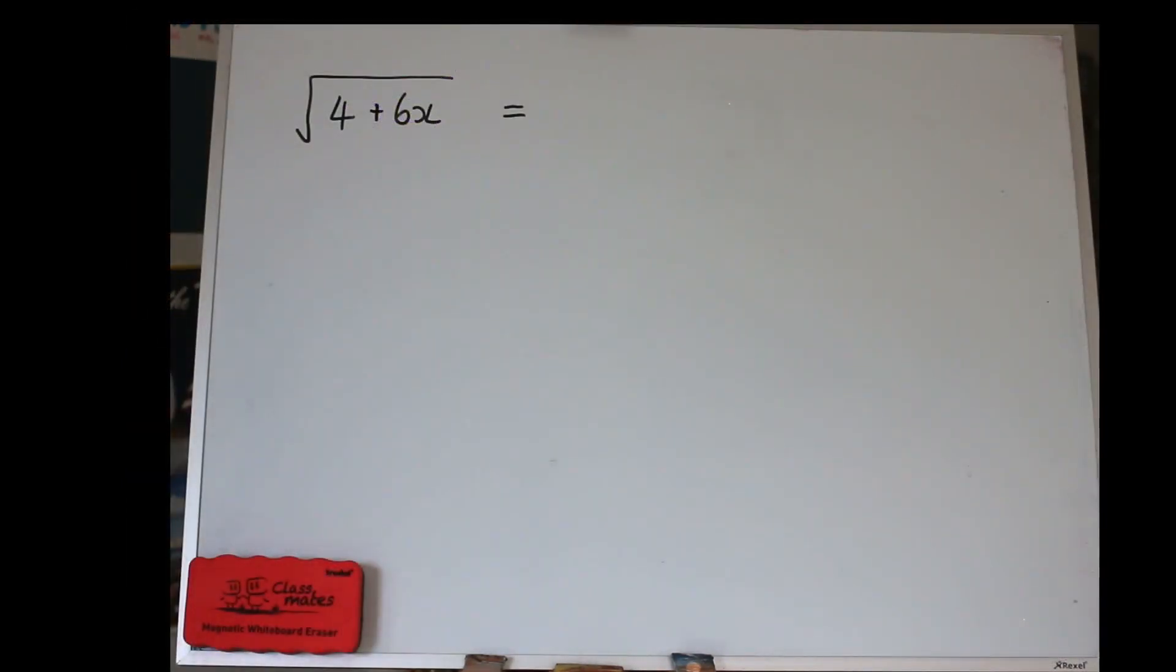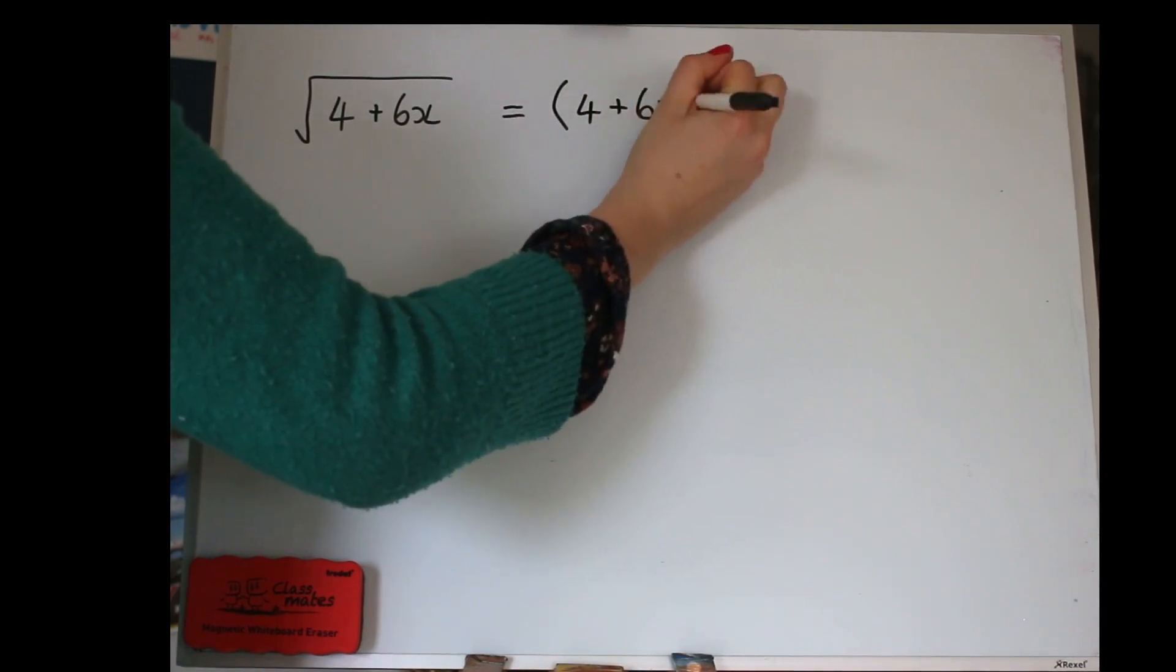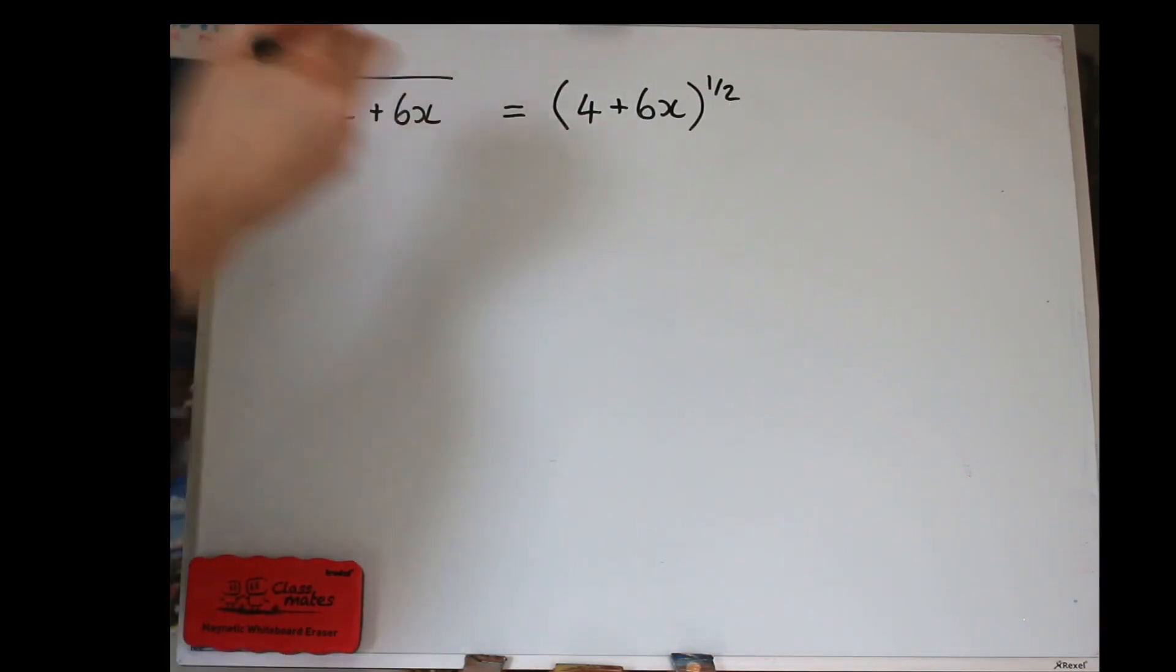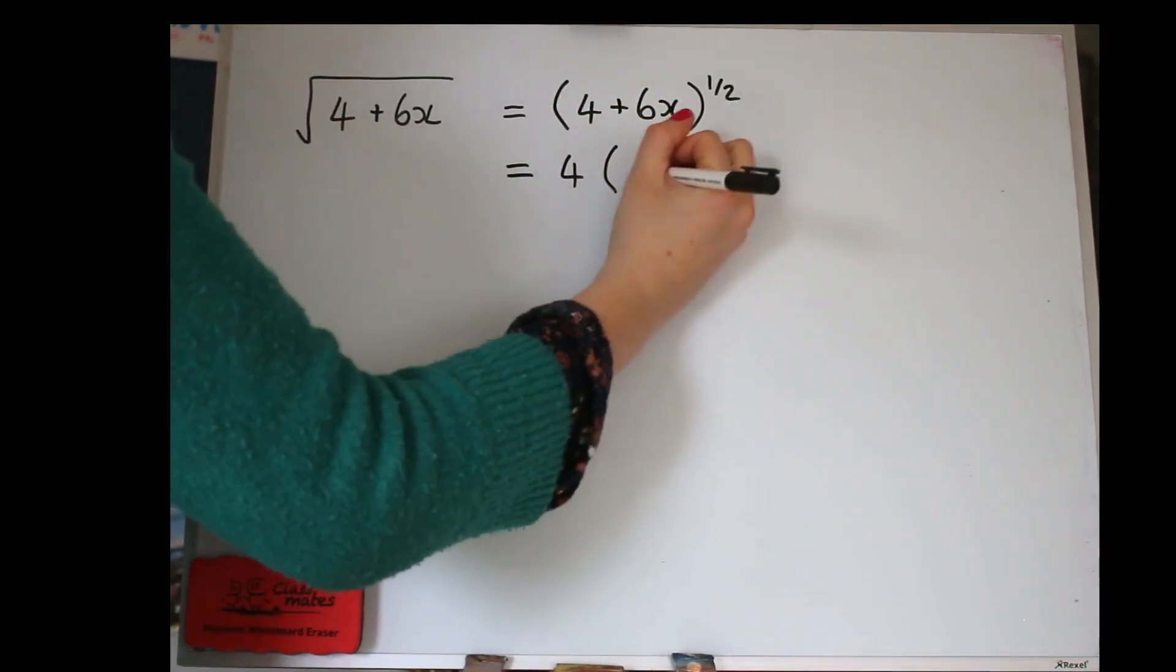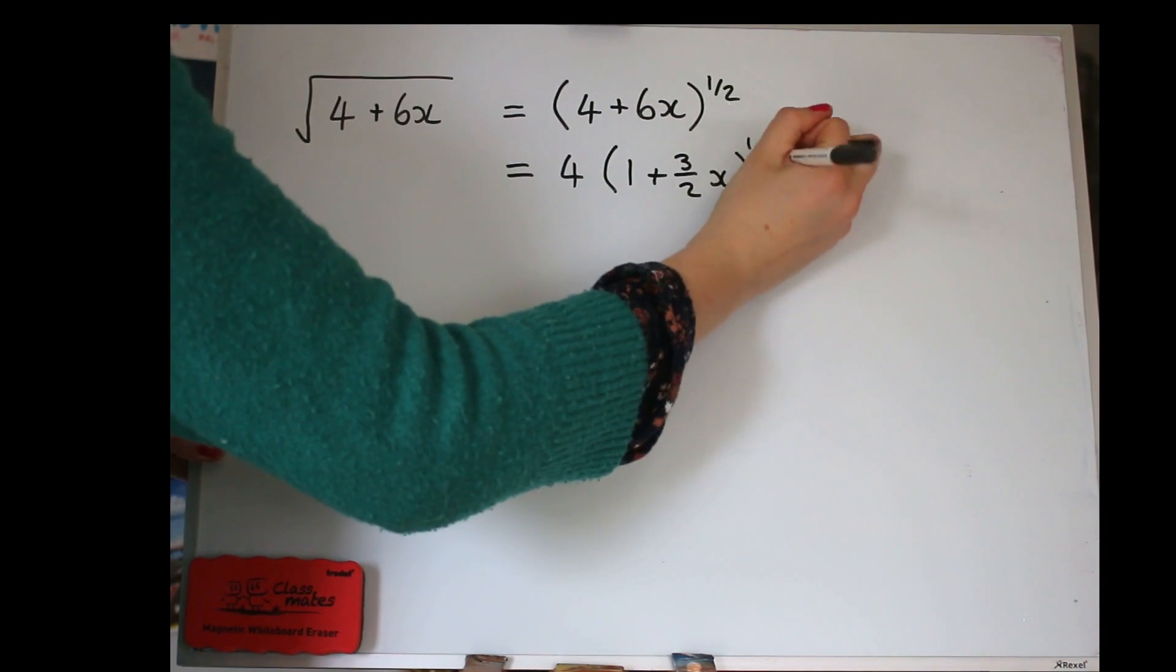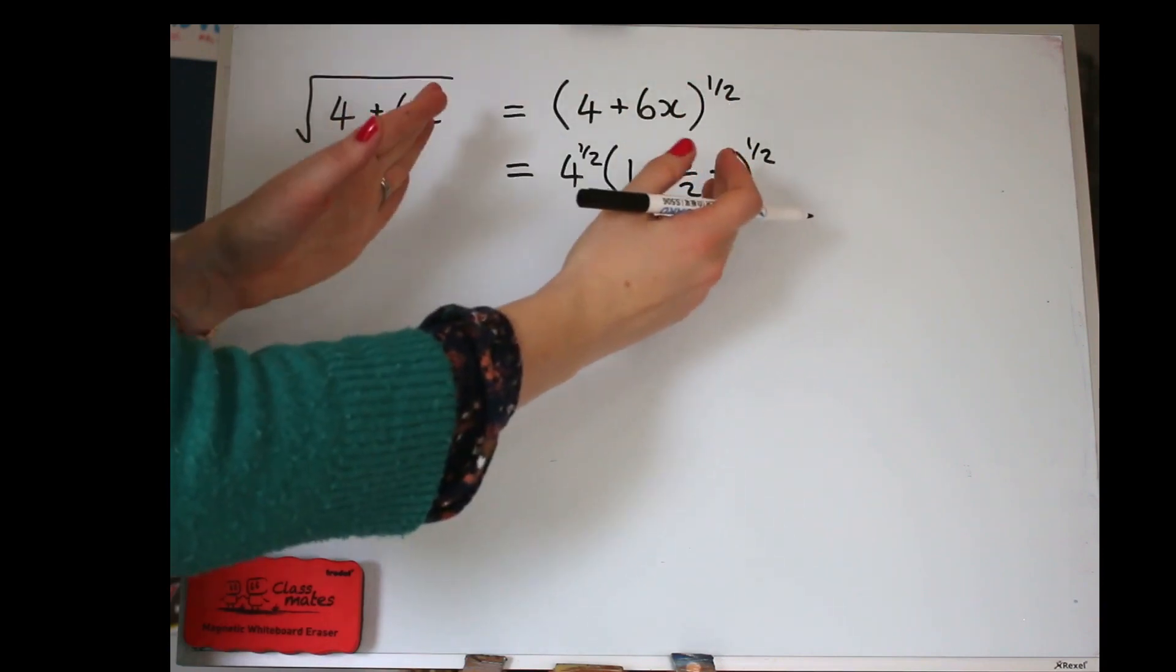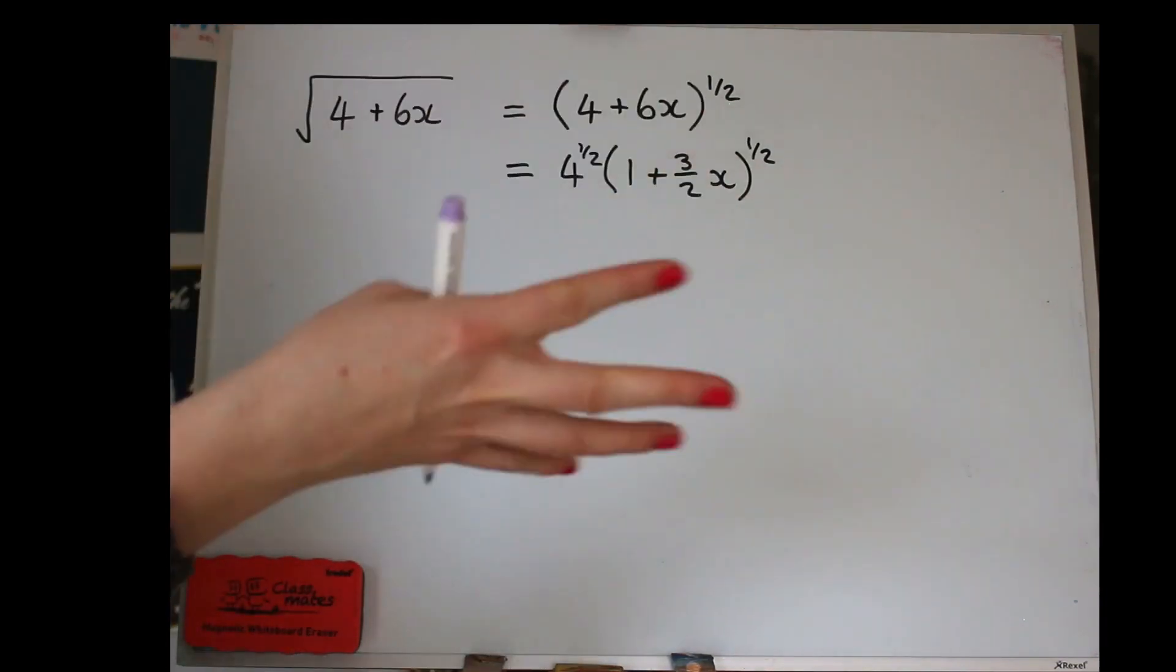Okay, the next example is looking at the root of 4 plus 6X, so let's write that as a power, rather than a root sign, and I've also included a number here that's not 1 to show you what to do. We need 1 there to use the formula, so we need to take 4 out as a common factor, so removing that from the bracket, we'll get 3 over 2X. Now, it's all to the power of a half, your 4 will also have a power attached to it, because you can pull the 4 out of the bracket, but it'll still have that power.